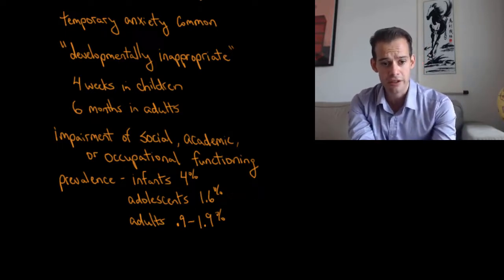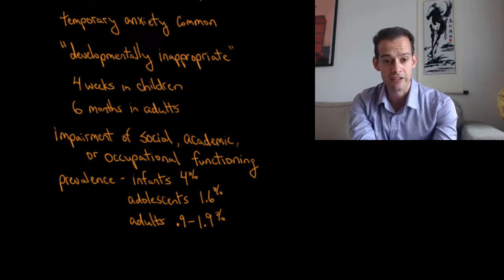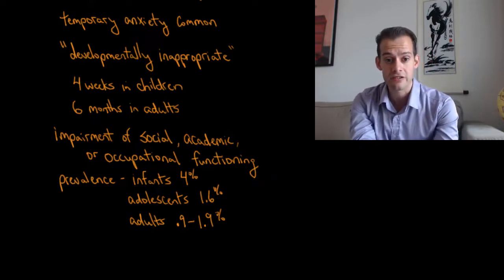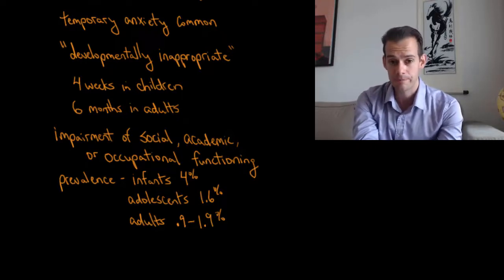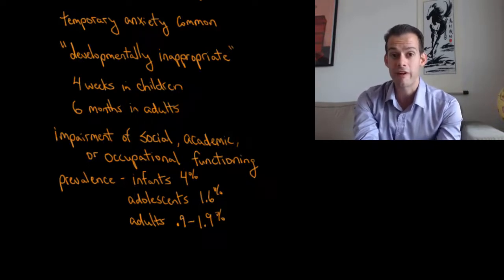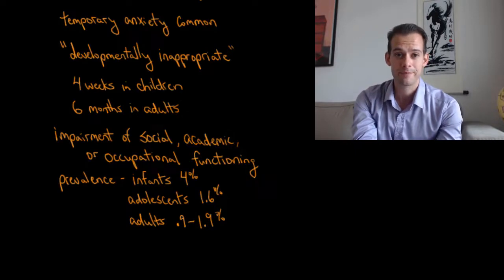And the estimated prevalence of this separation anxiety is about four percent in infants, about 1.6 percent in adolescents, and 0.9 to 1.9 percent in adults. Okay so those are some examples of anxiety disorders and some details about their symptoms and prevalence. I hope you found this helpful. If so please like the video and subscribe to the channel for more. Thanks for watching.